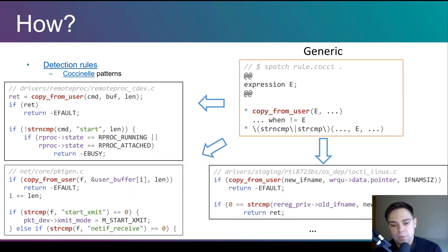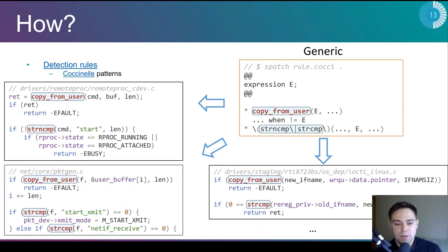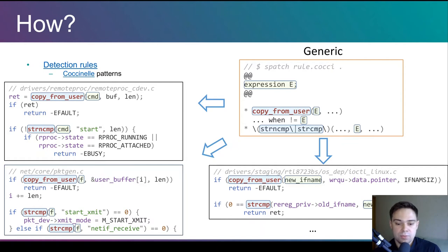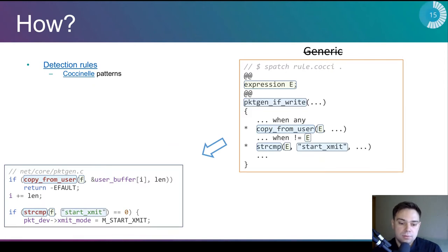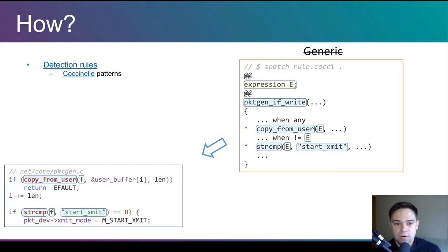Coccinelle will find many different functions that fall into a pattern in the kernel — that is usually what you want when writing a rule for a static analyzer, to catch as many cases of API misuse as possible. But in CVHound, I want the contrary: I want to search for only one specific case and check whether it is present in the kernel or not. So I add additional details to the rule to make it more strict — to detect only one case, but detect it across all changes from the commit where it was introduced to the commit where it was fixed.